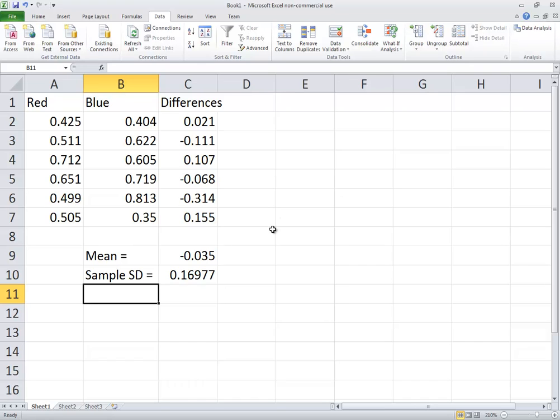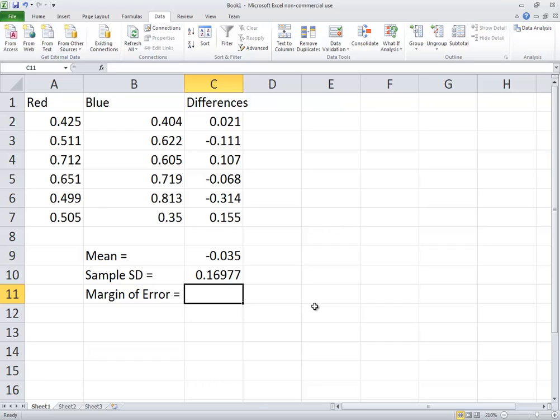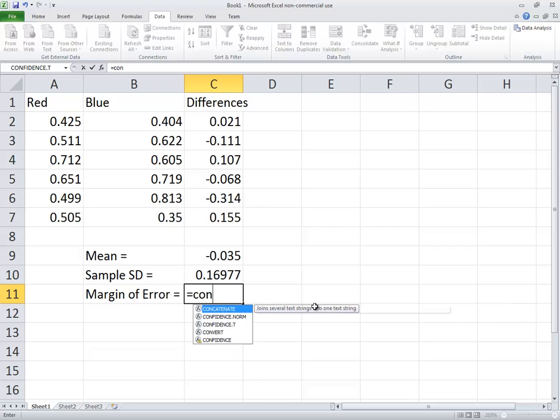Now, the next thing we're going to get is the margin of error. So our margin of error, that's given to us by, we're doing equals, and the confidence dot T. Now, there may be other situations where you find a confidence interval where you won't use this function. But specifically, when we're working with matched pairs, you want to use confidence dot T.